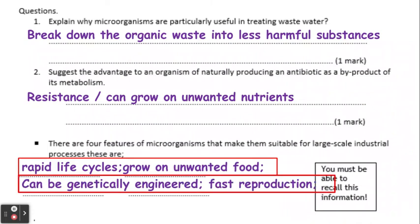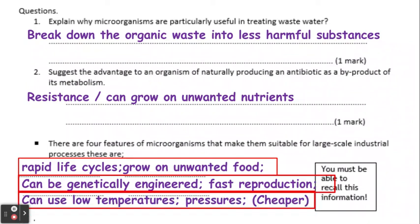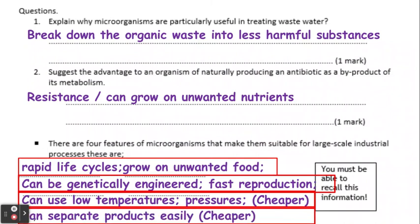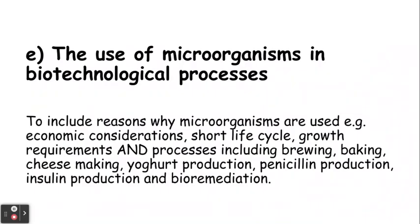Microorganisms can be genetically engineered — for example, in insulin production, E. coli is genetically modified and engineered first. We can get fast reproduction, which helps us produce a lot of product quickly. We can use low temperatures and pressures, making the whole process cheaper, and we can also separate the products easily from the microorganisms.